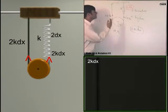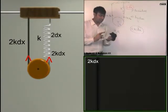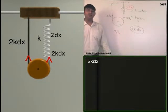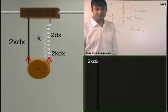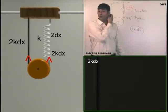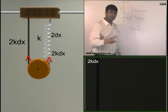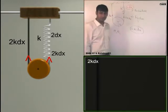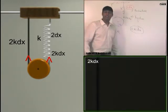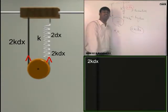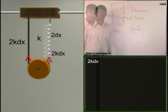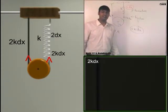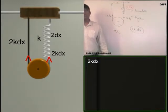Tell me was there already some extension in the spring? Yes or no? Already, without me giving it any dx, was there already some extension in the spring? Yes sir. So Mg was balancing that force. Am I right? So do I need to take Mg and that initial extension or I can just say they were in equilibrium. Let me focus on the unbalanced force. Were they equal or not initially, was the body in equilibrium? Yes sir.